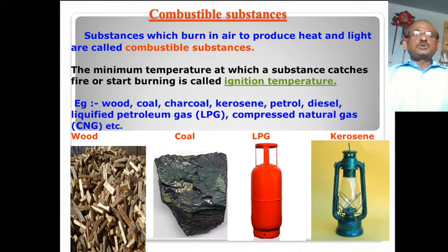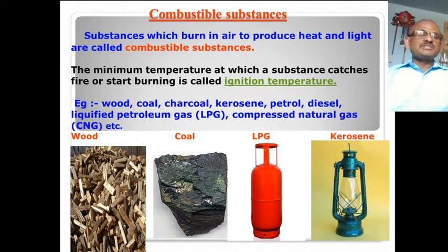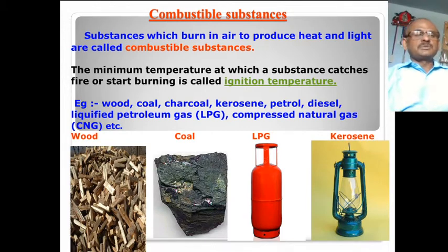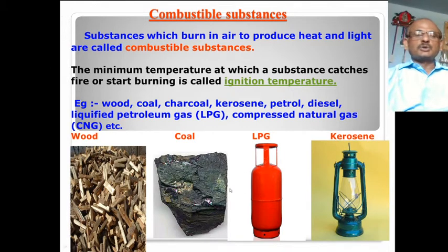To burn a substance, a minimum temperature is needed. That minimum temperature is called the ignition temperature. Different combustible substances — wood, coal, LPG, and kerosene — have different ignition temperatures.